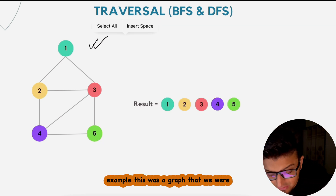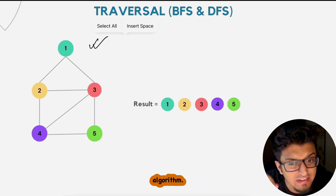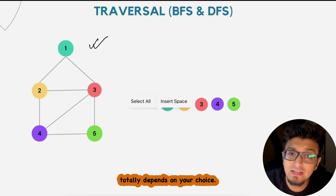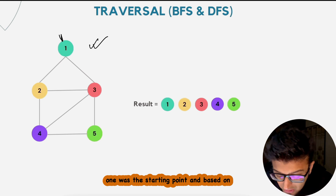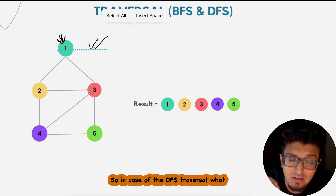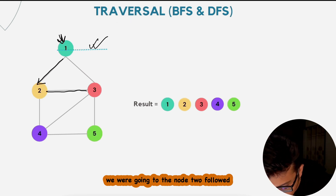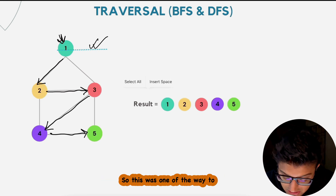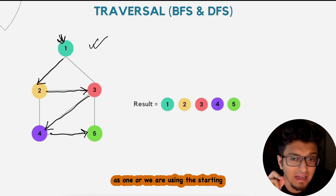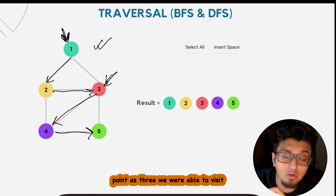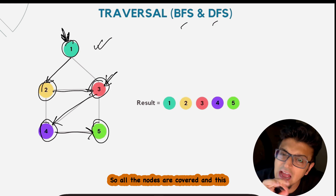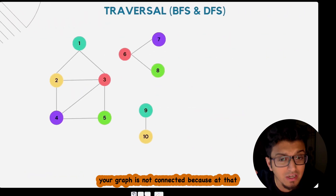In our previous example, we used a connected graph to understand BFS and DFS. Every traversal needs a starting point — in that case, node one was the starting point. Whether we used DFS or BFS, we could visit all nodes: one, two, three, four, and five. This was simple because the graph was fully connected.